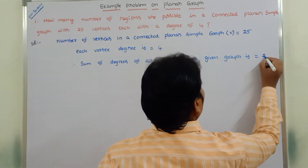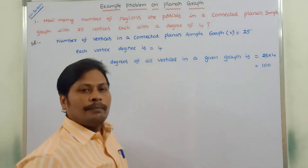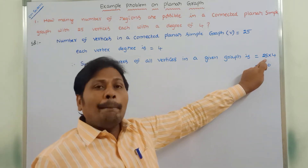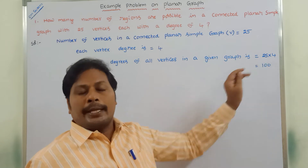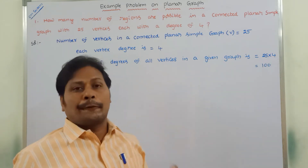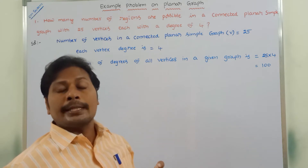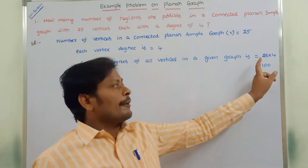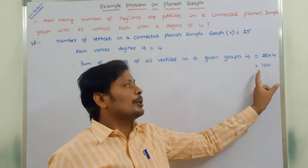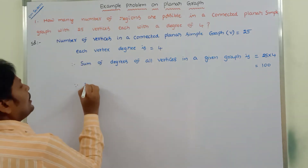Therefore, the sum of degrees of all vertices in the given graph is 25 into 4, which is equal to 100. The total number of vertices is 25, each with degree 4, so the sum of degrees of 25 vertices equals 25 × 4 = 100.